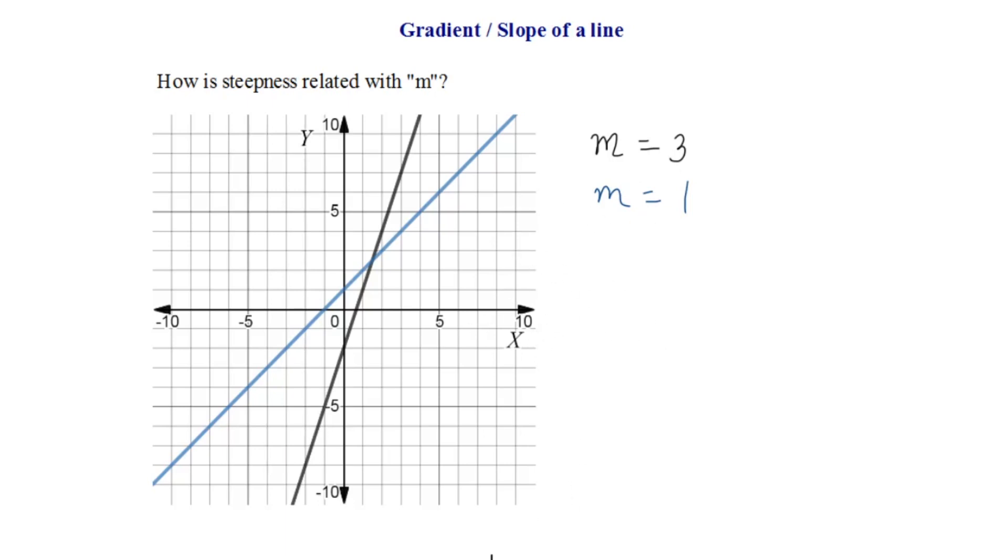So let's relate this gradient with the steepness. As you can see from the diagram, the black line is more steep as compared to the blue line. And now observe the gradient values. You can see that the gradient of black line is more than the gradient of blue line. So hence I conclude that steeper the line, more is its gradient.